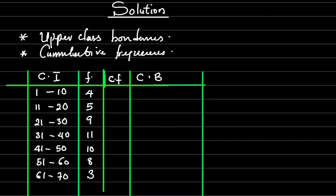In drawing an ogive or a cumulative frequency curve, there are two basic things you need to know. The first one is the upper class boundary, and the second is the cumulative frequencies. Once you have these two, you are good. The class interval and frequency are gotten from the question, so let me teach you how to get the cumulative frequency and the class boundaries.